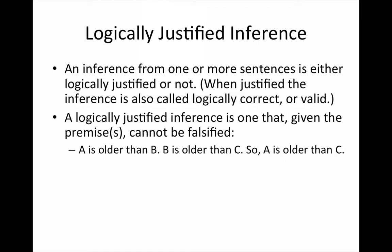Here are some examples. Take the following argument: A is older than B, B is older than C, so A is older than C. Whatever numbers you plug in to replace the relation 'older' will be such that A always comes out to be older than C.